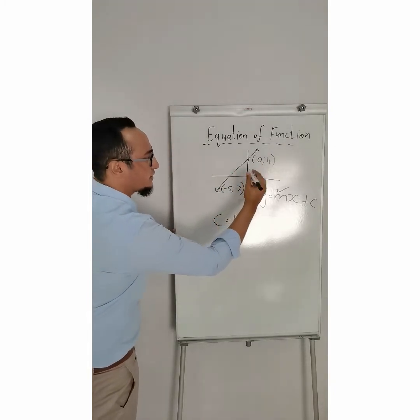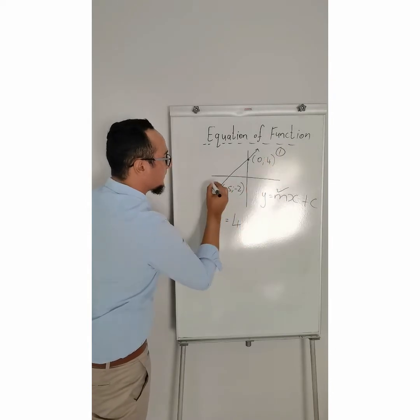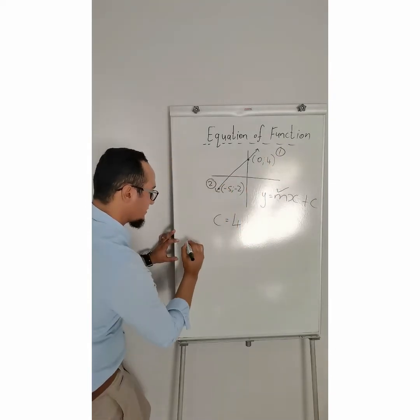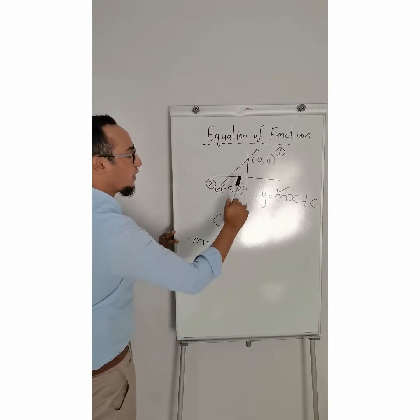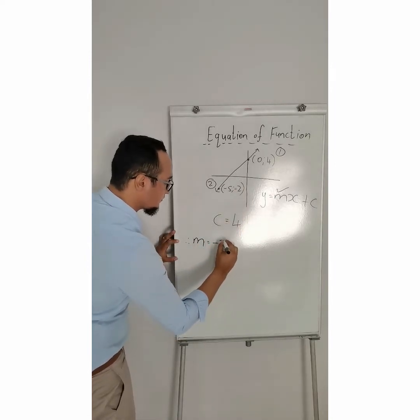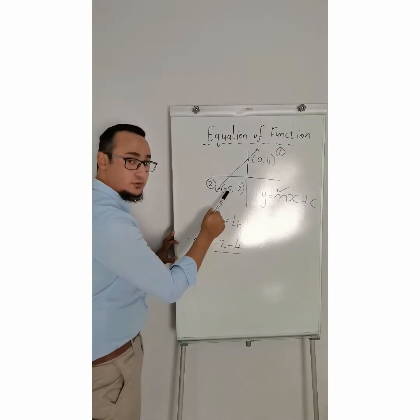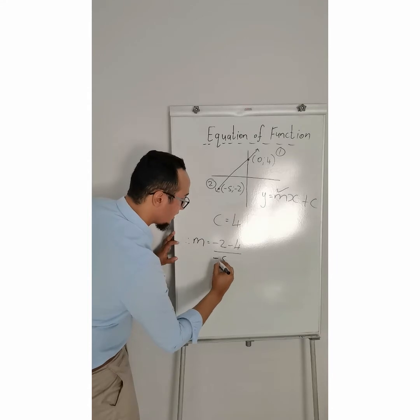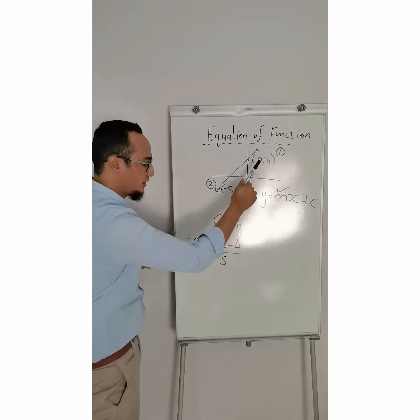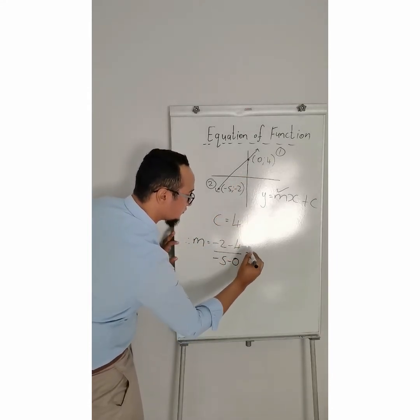So, determine the gradient, I'll make this point number 1, I'll make this one point number 2, and I'll say, therefore, m is equal to y2 minus y1 over x2 minus x1, which is minus 5 over minus 0, and this will be my gradient.